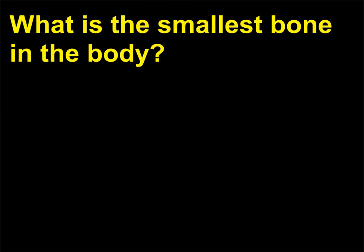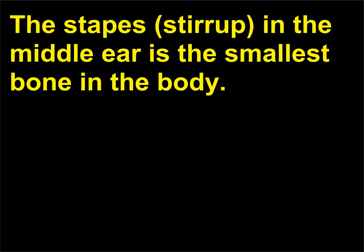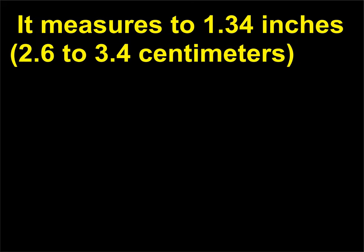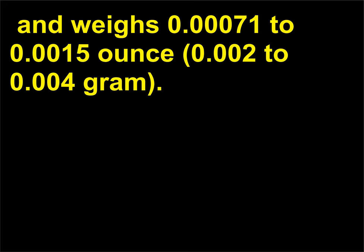What is the smallest bone in the body? The stapes, or stirrup, in the middle ear is the smallest bone in the body. It measures 1.34 inches (2.6 to 3.4 centimeters) and weighs 0.00071 to 0.0015 ounce (0.002 to 0.004 gram).